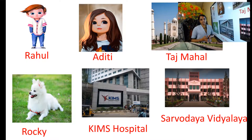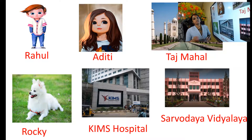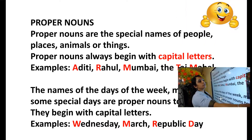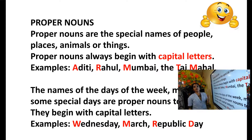So do you understand the difference between common and proper noun? Common noun means it's a general name given to a person, place, animal, or thing. Proper noun means it's a particular name — the special name we give to a person, place, animal, or thing. So now we can go through the definition of proper nouns. The definition is there in your textbook itself: proper nouns are the special names of people, places, animals, or things. And always remember, proper nouns begin with capital letters.